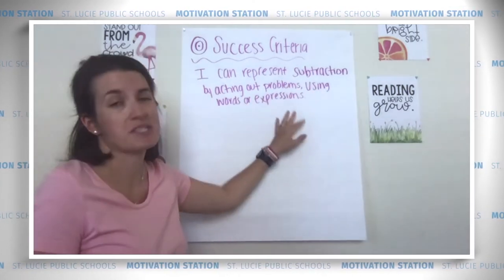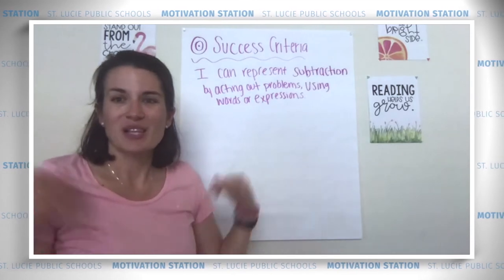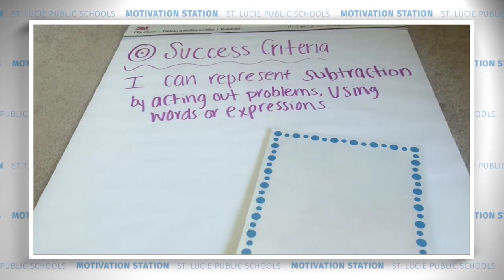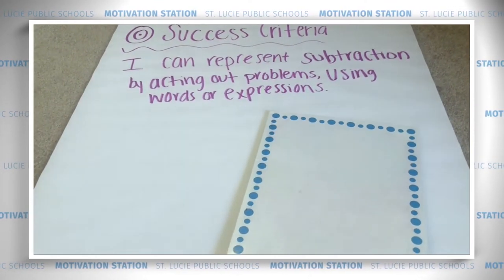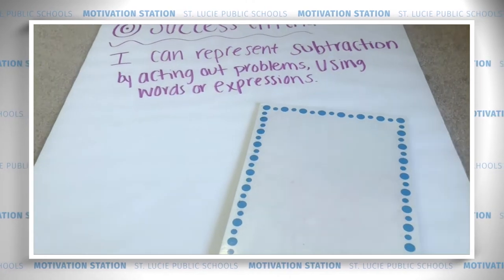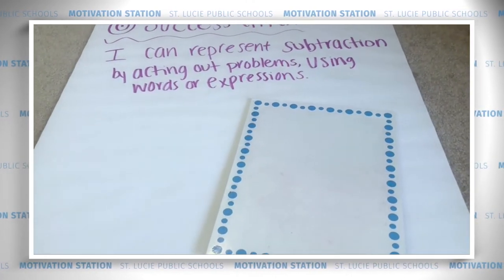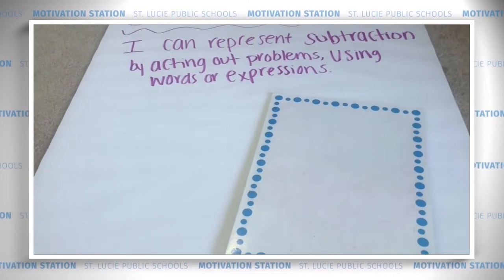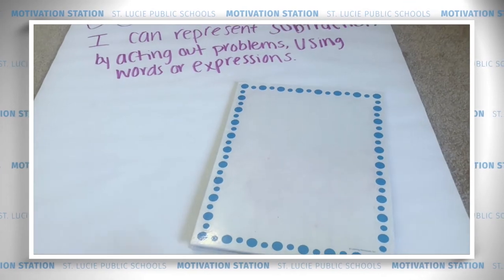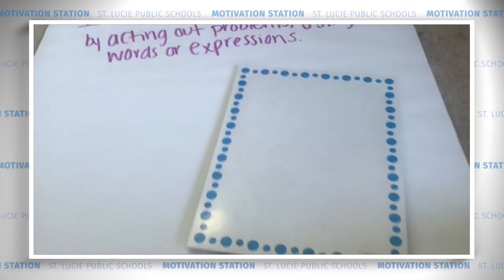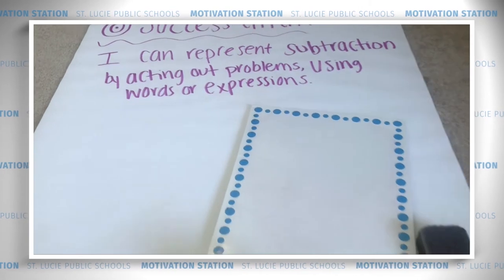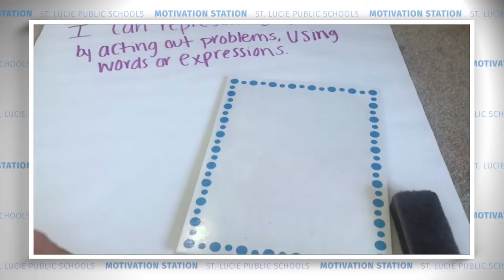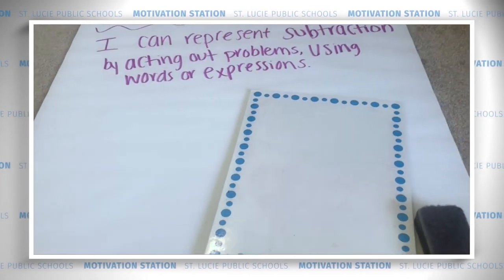Let's get some materials and practice. We're going to practice our success criteria by working on some subtraction problems using expressions, and we're going to solve them by drawing pictures — I think that's the easiest and best way to solve the problem. To do that, we're going to need a whiteboard or some paper, a marker or pencil, and an eraser. Let's start with a subtraction problem — I'll give you a word problem, we're going to write it as an equation, and then solve it.